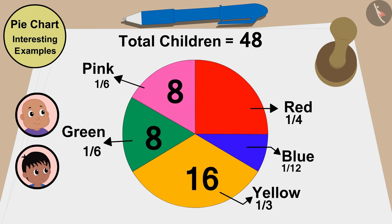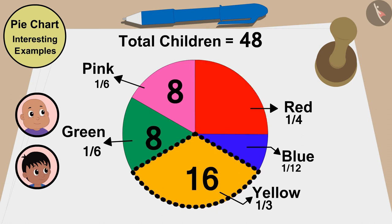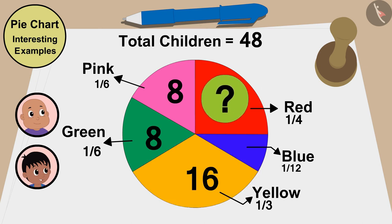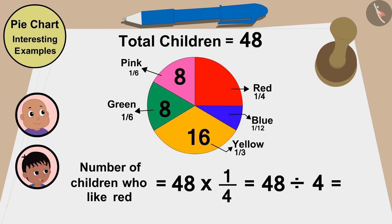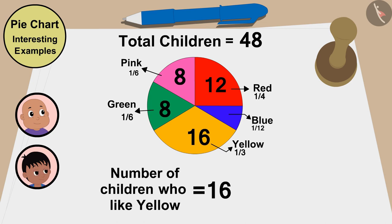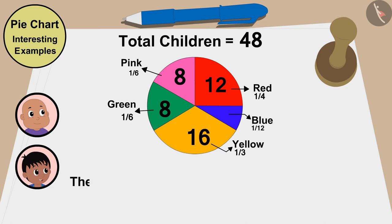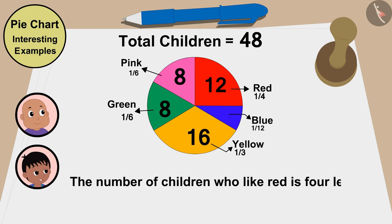Bablu, the share of children who like red is also quite large, but it is a little smaller than the share of children who like yellow. Let's find out the number of children who like red. The number of children who like red will be 48 times one fourth, or 48 divided by 4, which is 12 children. Yellow color is liked by 16 children, which means the number of children who like red is 4 less than the number of children who like yellow.